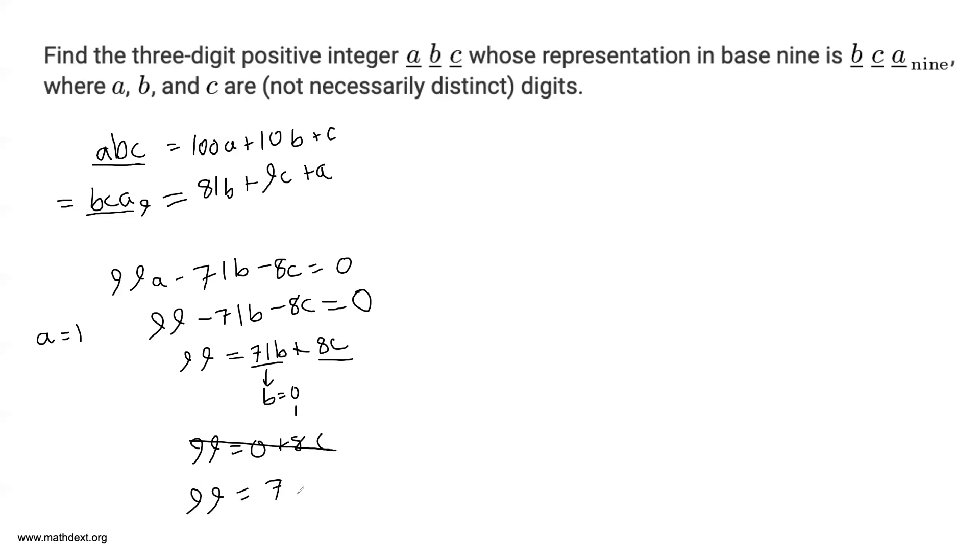If you have B is equal to 1, 99 is equal to 71 plus 8C. You have 28 is equal to 8C. If you just rearrange, C is not going to be a positive integer here. C is going to be something like 3.5. So neither of those cases work, which means that you can safely discard A equals 1.